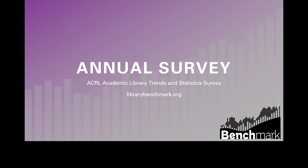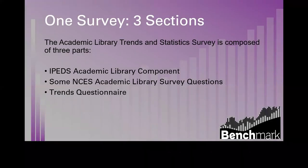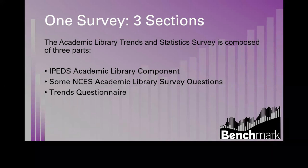We endeavor to make the survey results available quickly, typically three months after the survey closes. The intellectual oversight for the annual survey is provided by the ACRL Academic Library Trends and Statistics Survey Editorial Board. There are three sections: the first being the IPEDS Academic Library component — we include all of those questions.